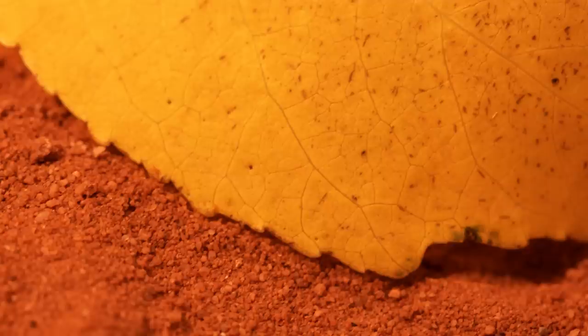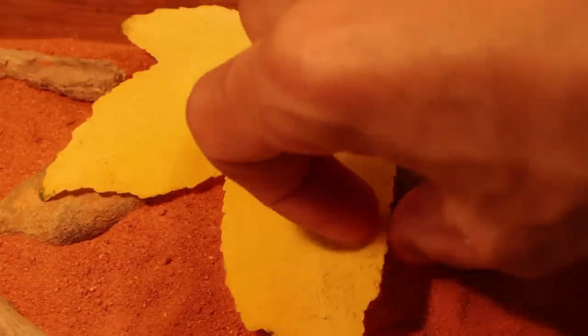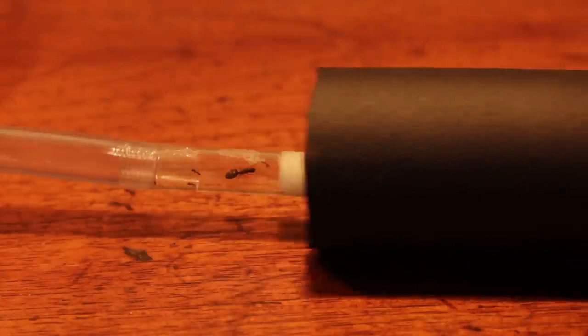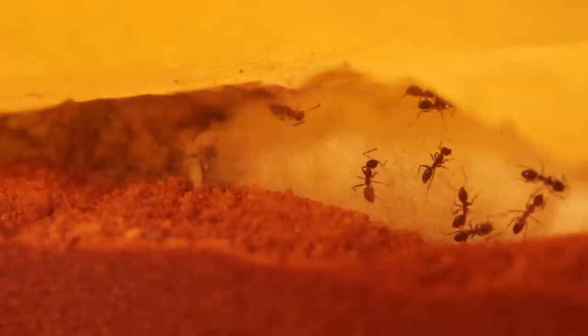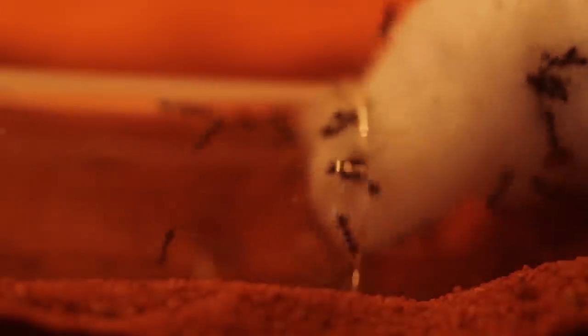Whatever you end up using, just make sure it's not too much of a hassle to remove. That way you can check up on the ants with minimal disturbance. Once you're happy with their placement, simply remove the cotton seal. Now, the colony is free to roam around and explore their new environment.